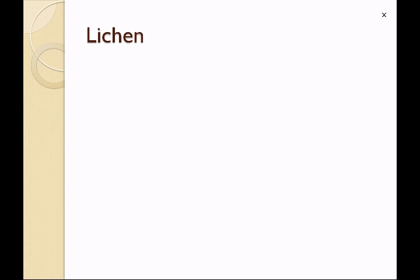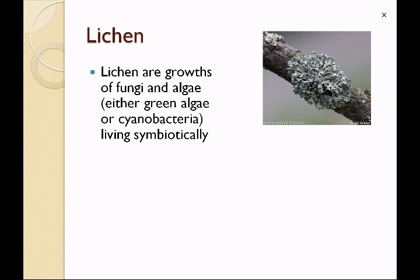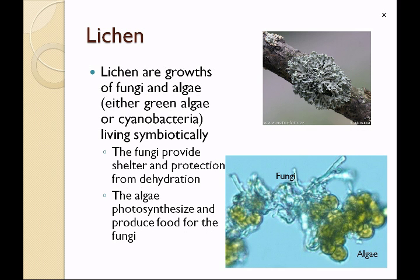In lab we'll also be looking at lichen. Lichen are growths of fungi and algae — either green algae or cyanobacteria, commonly known as blue-green algae — that live symbiotically with one another. The fungi provide shelter and protection from dehydration, whereas the algae photosynthesize and produce food for the fungi. Lichen are very slow growing and also a very good indicator of pollution. If you find a lot of lichen in an area, you know that pollution is low.